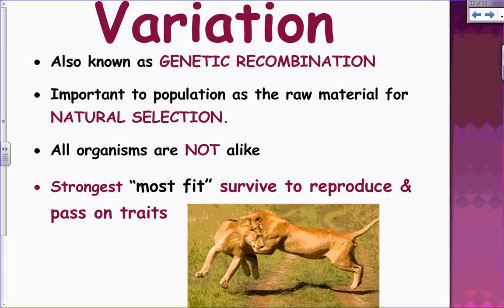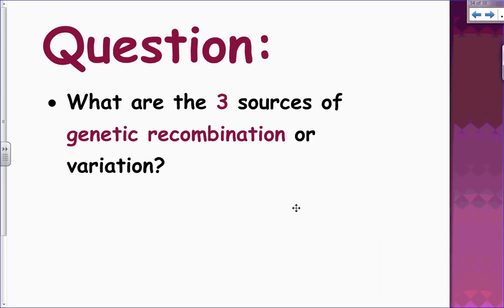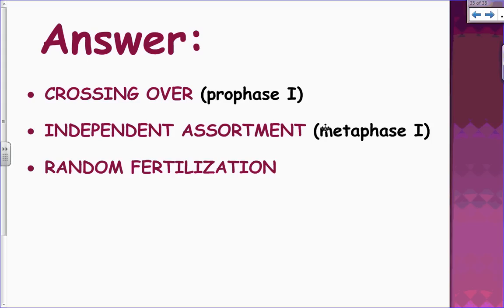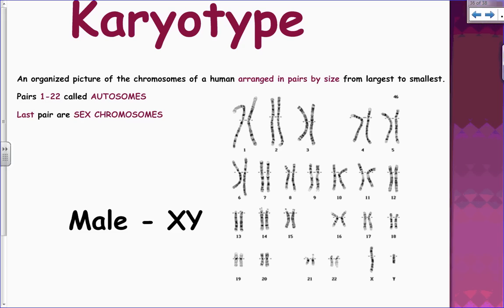Both sperm and egg are haploid and combine to form a diploid zygote. Variation — also called genetic recombination — is important for populations and natural selection: not all organisms will be alike, allowing the strongest to survive and reproduce, which is the basis of evolution. Three sources of genetic recombination in meiosis are: crossing over in prophase one, independent assortment in metaphase one, and random fertilization — there's no way to predict which sperm will reach the egg.